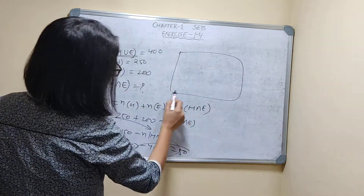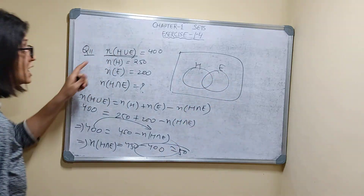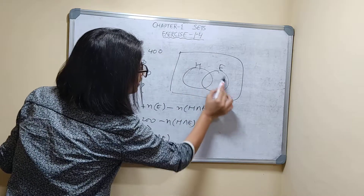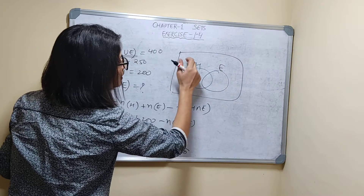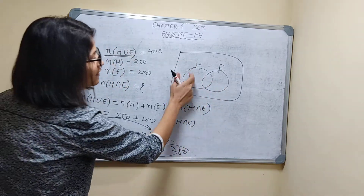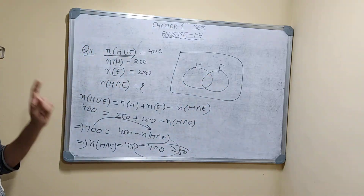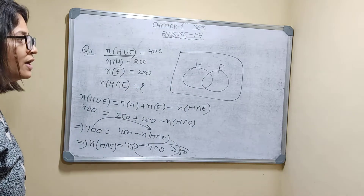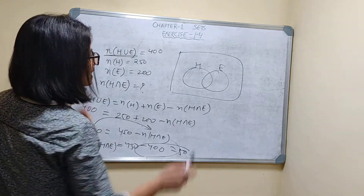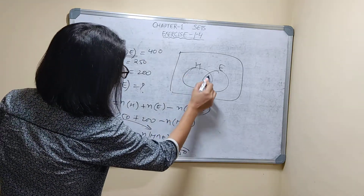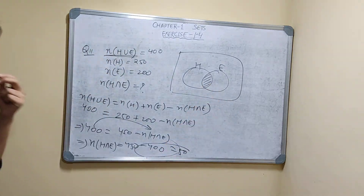Drawing a Venn diagram: Hindi speaking on one side, English speaking on the other. N(H∪E) is the total — all 400 — because not a single student is there who doesn't know either language. N(H) total is 250, N(E) total is 200, and the common part N(H∩E) is 50.